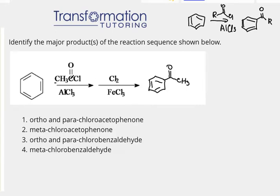Next I do Cl2 with FeCl3. Cl2 FeCl3 is a reaction that adds chlorine to the benzene ring. Usually it's pretty simple, but in this case we have to take into account that we already have a group on the benzene ring, which is the acyl group, and we have to know where the chlorine will go.